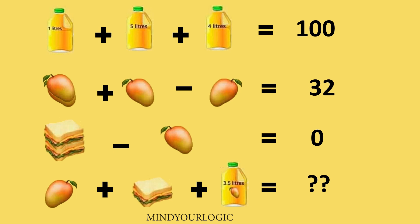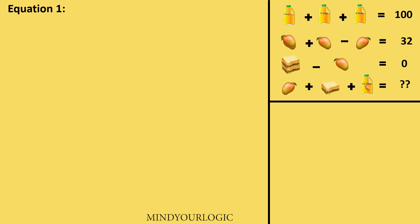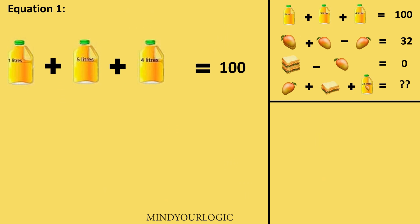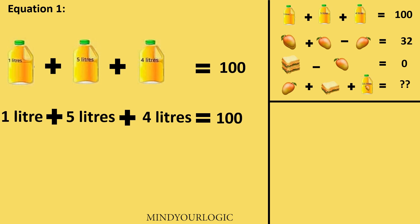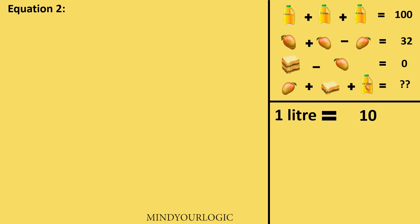Look at these equations carefully and find the value of equation 4. Let's start with the first equation. In the first equation, I have 1 litre plus 5 litres plus 4 litres of mango juice equal to 100. That is 10 litres of mango juice equals 100, so 1 litre will be equal to 10.